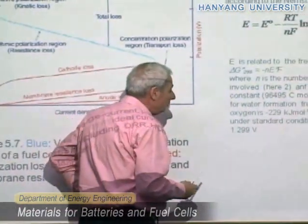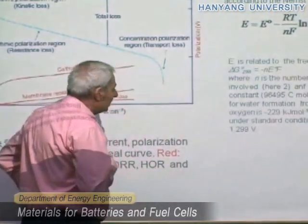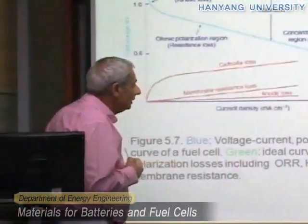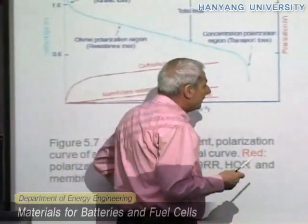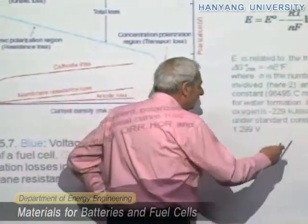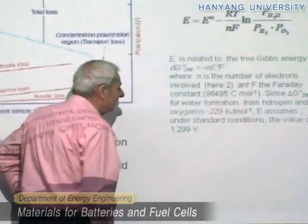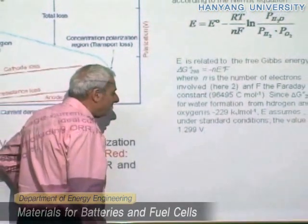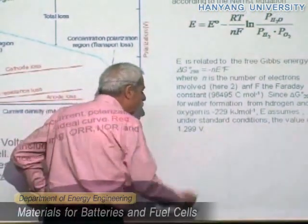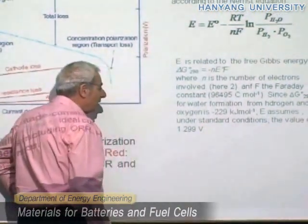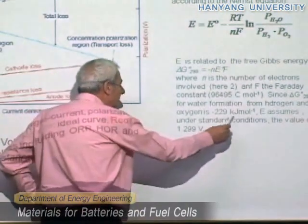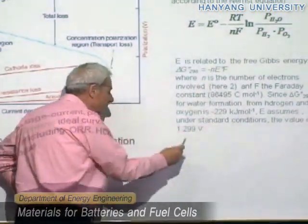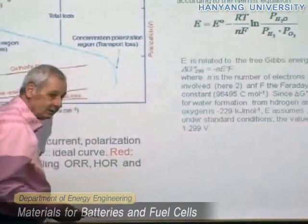In this case, N is 2, F is the Faraday constant. And since the Gibbs energy difference for water formation for molar oxygen is 229 kJ/mol, therefore if you make this calculation, you have that E is equal to 1.23 V.